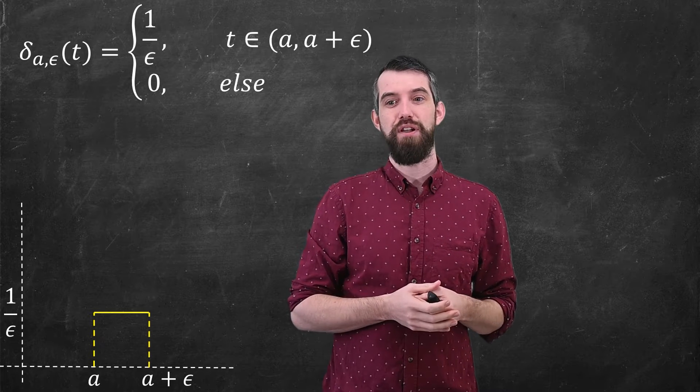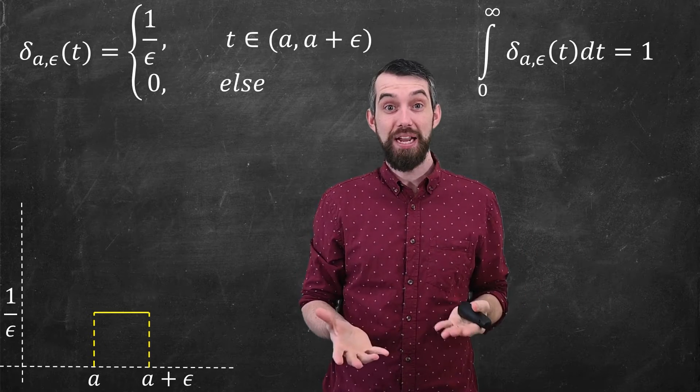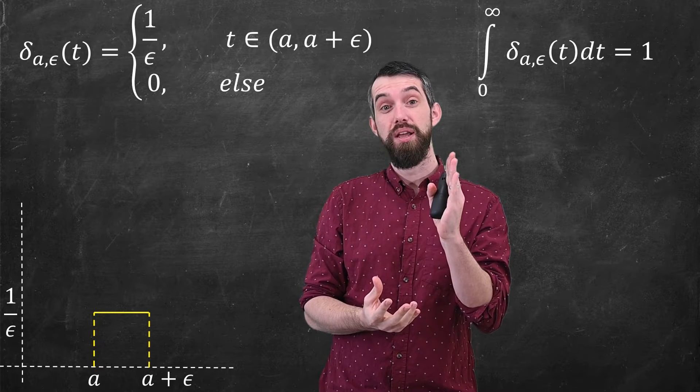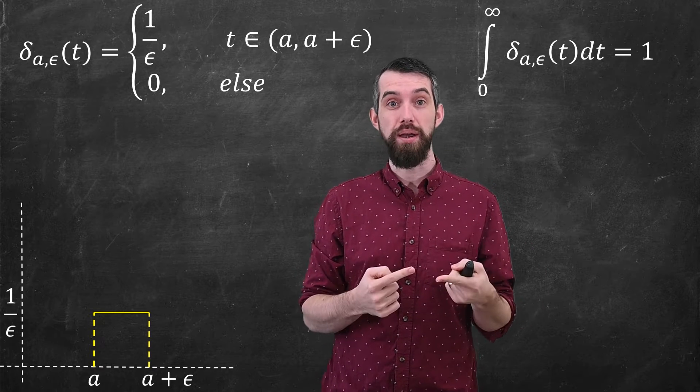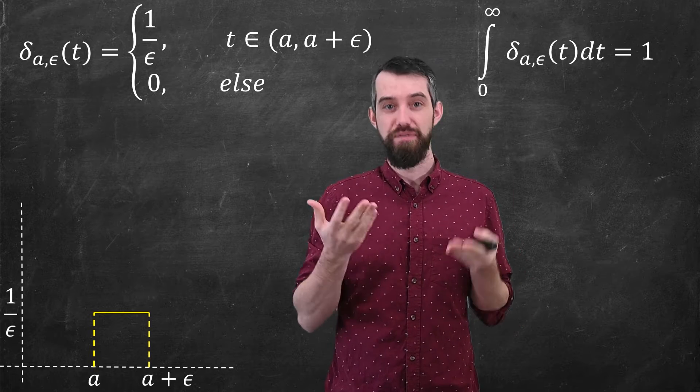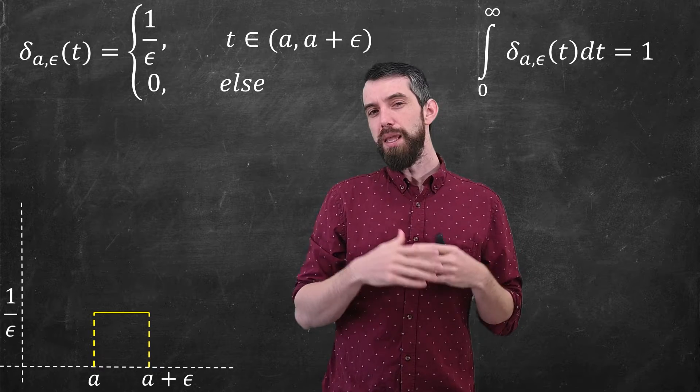Now, if I do this, I can then integrate the specific function, and because it's just a rectangle, the base is epsilon, the height is one over epsilon, they multiply to give an area of one. And since integrals are just the area under a curve, the particular integral of this function is just one.